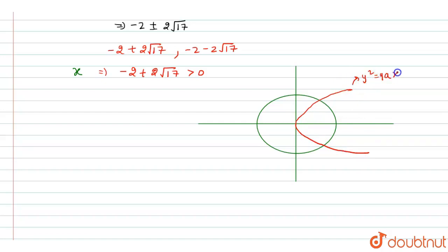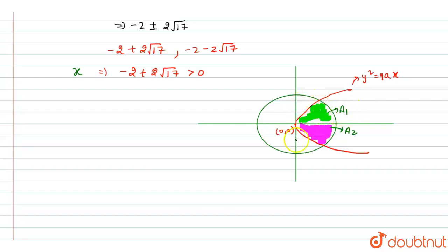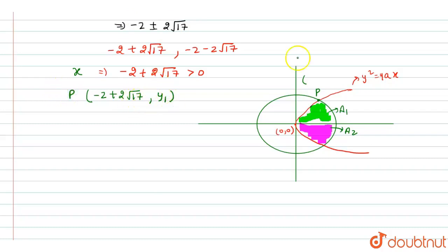We find area 1 and double it to get the complete area. Let point P = (−2 + 2√17, y₁) be the point of intersection. We draw a perpendicular from P onto the x-axis. The complete area is: Area = 2 × [integral from 0 to P of y_parabola dx + integral from P to 8 of y_circle dx], where P = −2 + 2√17 and 8 is the radius of the circle.